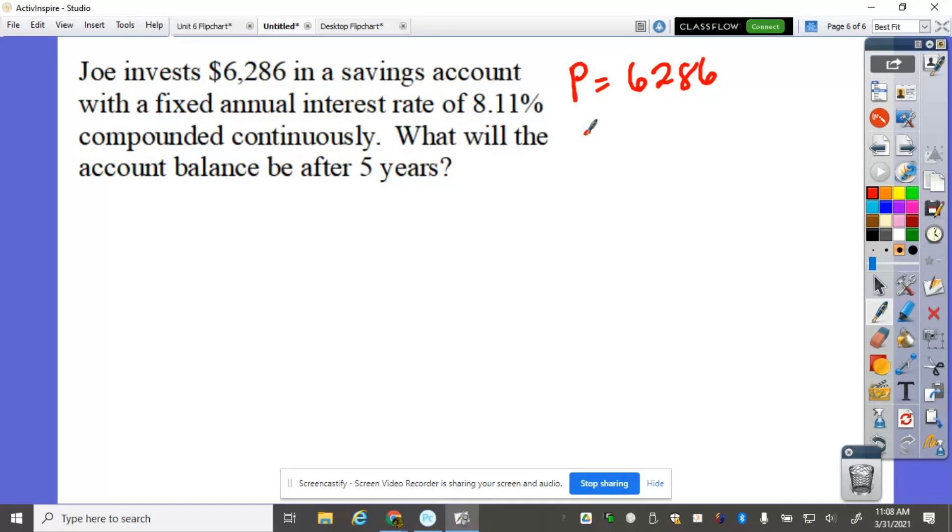The rate, which is 8.11%, can be moved to the same place to the left, so the rate now is 0.0811, compounded continuously, so we're going to use the APERT.